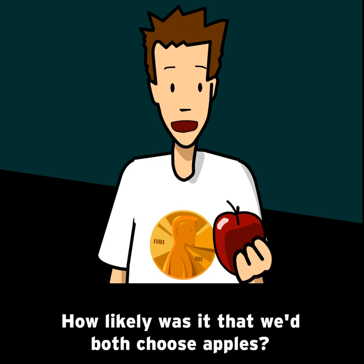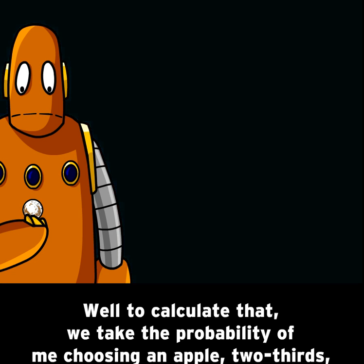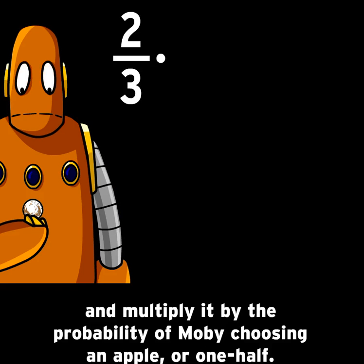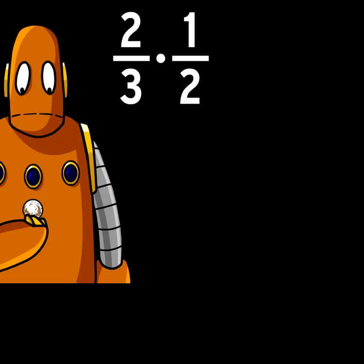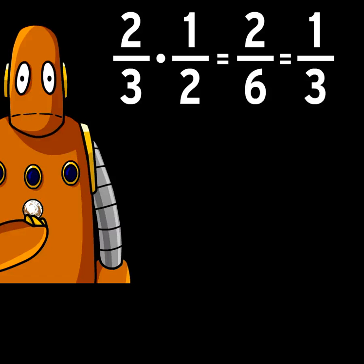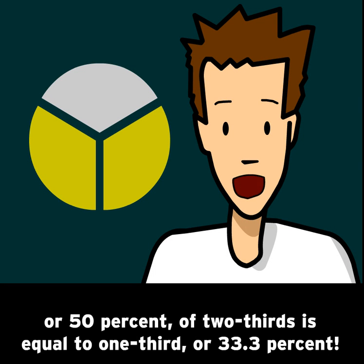How likely was it that we'd both choose apples? To calculate that, we take the probability of me choosing an apple, two-thirds, and multiply it by the probability of Moby choosing an apple, one-half. Two-thirds times one-half equals two-sixths, which reduces to one-third. So there was a 33.3% chance that Moby and I would both get apples. That makes sense because one-half, or 50%, of two-thirds is equal to one-third, or 33.3%.